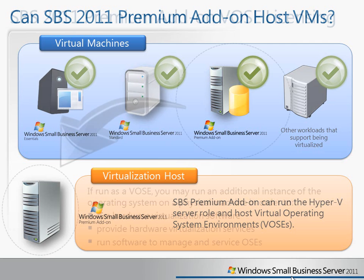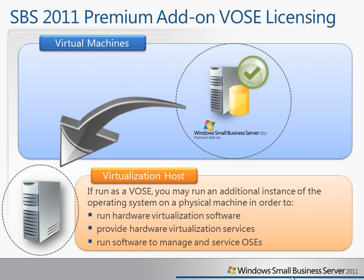One scenario that gets a lot of questions and causes confusion is whether you can use a single license of the Premium add-on to both host virtual machines and run as a virtual machine itself — acting as its own parent partition and also running in a child partition. The answer is yes, and this is exactly the same licensing you'll find in Windows Server 2008 R2 Standard. If you run it as a Virtual Operating System Environment, you may also run an additional instance on a physical machine, but only to run the hardware virtualization software, provide hardware virtualization services, and run software to manage and service those virtual machines.